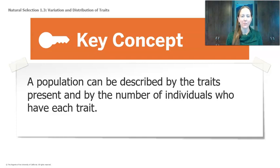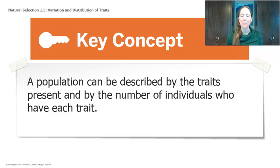We'll end today with our first key concept for natural selection. Make sure you record this. A population can be described by the traits present and by the number of individuals who have each trait.